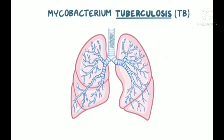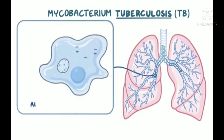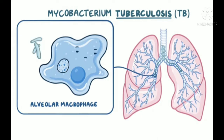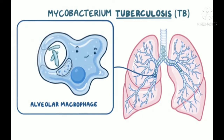TB can avoid the mucus traps and make its way to the deep airways and alveoli, where we have macrophages that eat up foreign cells, digest, and destroy them. With TB, they recognize foreign proteins on the cell surface and phagocytize them.